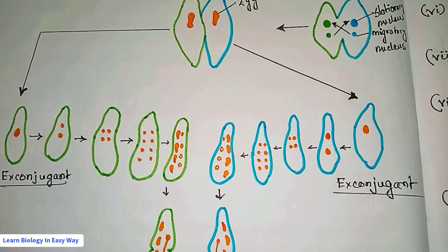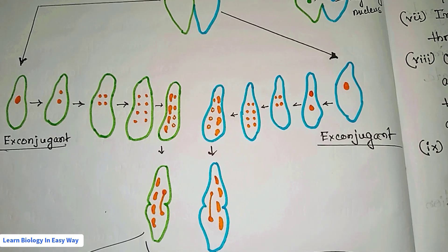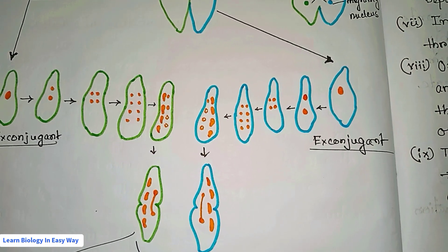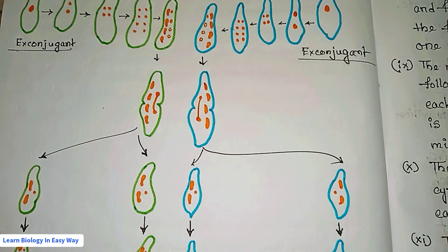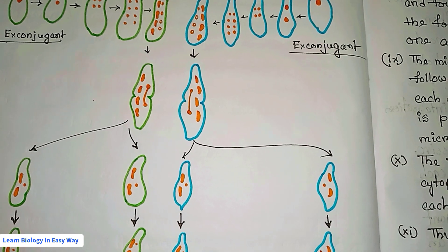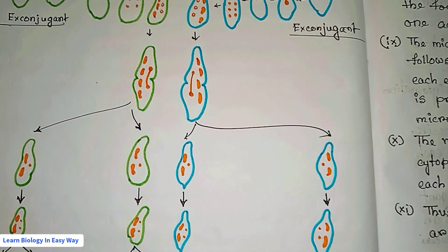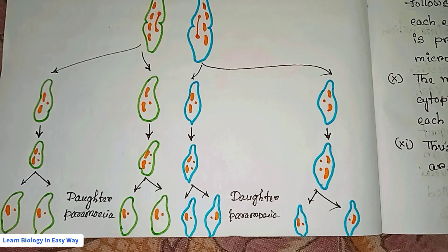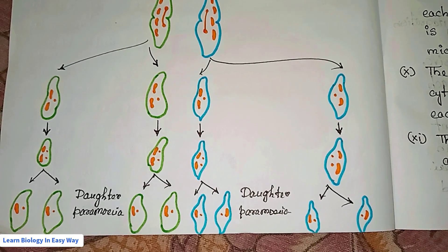In each ex-conjugant, the zygote nucleus undergoes three successive divisions forming eight nuclei, of which four become macronuclei and four become micronuclei. Three of the four micronuclei degenerate, leaving one active micronucleus. The micronucleus divides and cytoplasmic division follows, resulting in two paramecia from each ex-conjugant, each with two macronuclei and one micronucleus. The micronucleus again divides followed by cytoplasmic division, resulting in four paramecia each with one micronucleus and one macronucleus. Thus, from each ex-conjugant, four paramecia are formed.